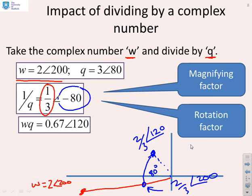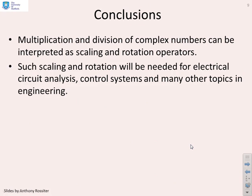And there's your answer. So some conclusions. We've shown that multiplication and division of complex numbers can be, and that's a key word, it doesn't have to be, but can be interpreted as scaling and rotation operators. Now scaling and rotation will be needed for electrical circuit analysis, control systems, and many other topics in engineering.